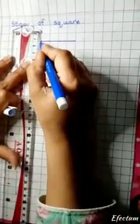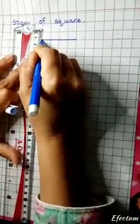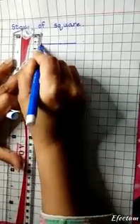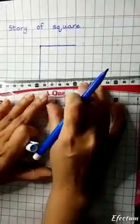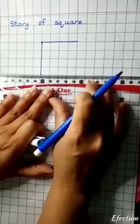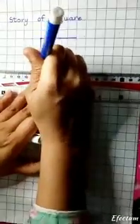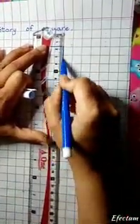Then from this side, one, two, three, four. See I am taking four blocks from each sides because it has four equal sides. So that's why we will take four blocks from each sides. Because it has four equal sides.